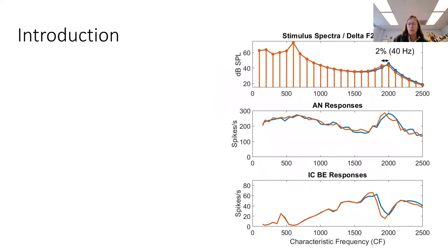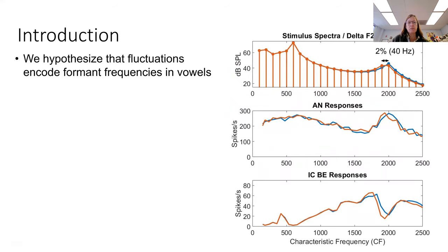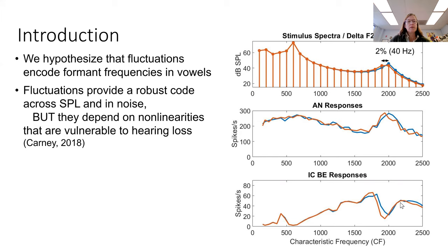This is an interesting way to imagine complex sounds being encoded. We hypothesize that these features might play a role in encoding vowel sounds, for example, as well as other speech sounds. The cue is very robust across a wide range of sound levels and in noise, but it depends on nonlinearities, and therefore it's vulnerable to hearing loss, which would be interesting for this community.